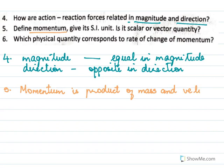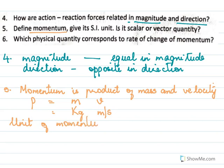Next: define momentum and give its SI unit. Momentum is the product of mass and velocity. So momentum p is written as mass into velocity. The SI unit of mass is kg and velocity is meter per second, so the unit of momentum is kg meter per second, which can also be written as kg meter second raised to minus one. Momentum is a vector quantity — it has direction as well as magnitude.